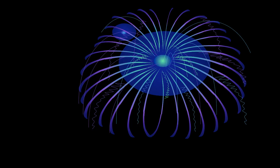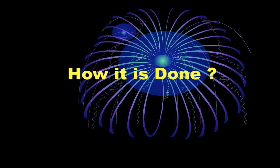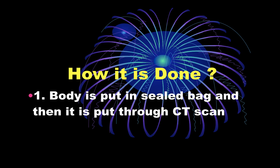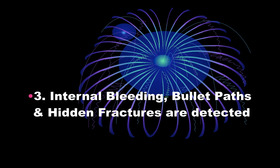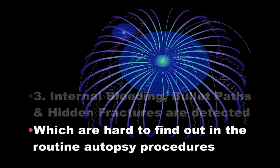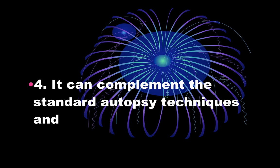X-ray, ultrasound, MRI, and CT scan are used in virtual autopsy. The procedure involves placing the body in a sealed bag and putting it through a CT scan machine. It finishes in seconds and acquires about 50,000 images of the body's inside. Internal bleeding, bullets, bullet tracks, and hidden fractures can also be detected by this technique, which are hard to find in routine autopsy procedures.